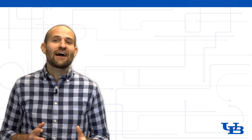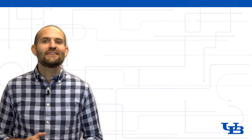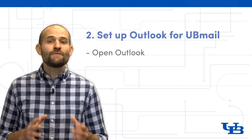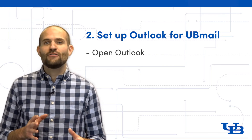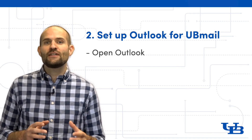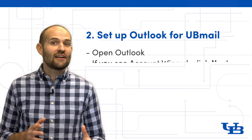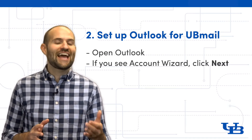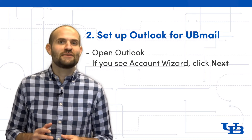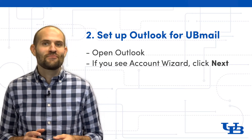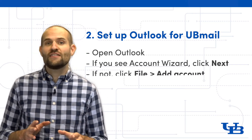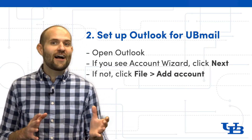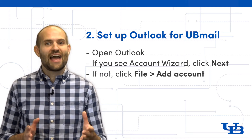Now that Outlook is installed, it's time to configure your UB Mail. The first time you open Outlook, you might be greeted with the Account Setup Wizard, in which case click Next to add your email account. If you don't see the Account Setup Wizard, just click File, then Add Account.